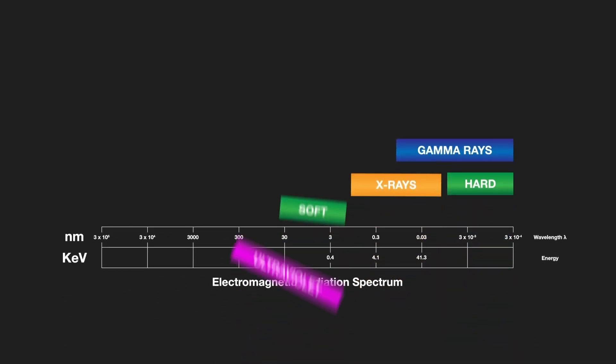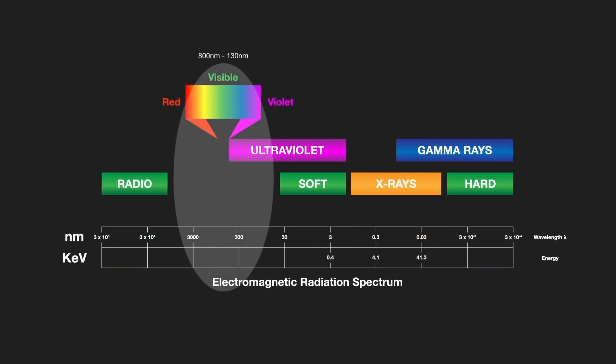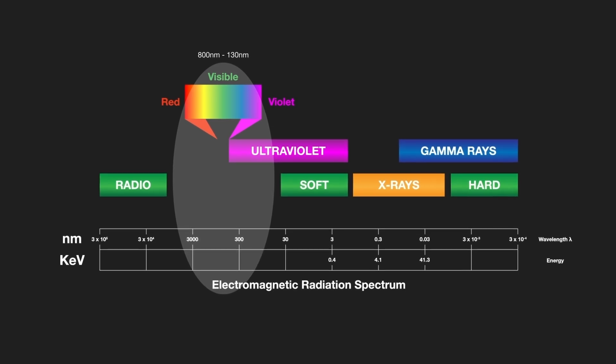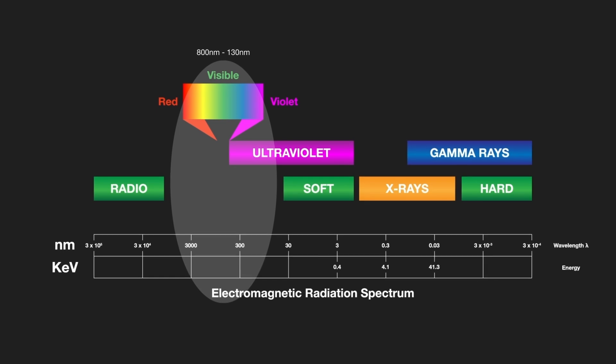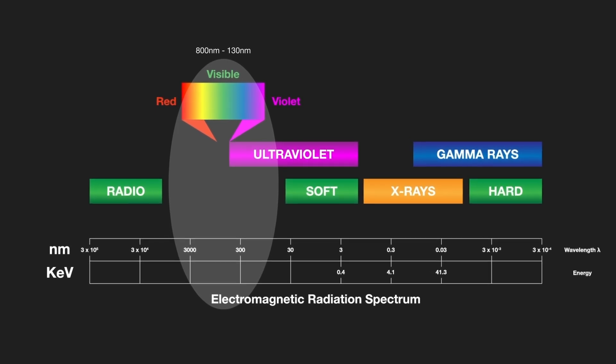The part of the electromagnetic spectrum which is used by OES includes the visible spectrum and part of the ultraviolet spectrum. In terms of wavelengths, that's from 130 nm up to around 800 nm.